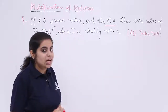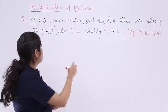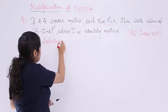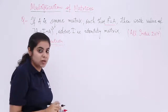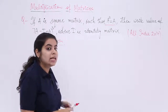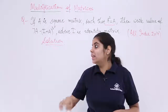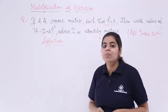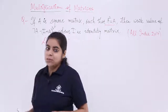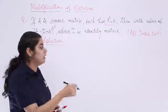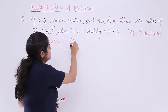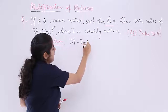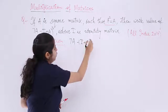Let's start the solution. First of all, let's write the expression again. The expression is 7A minus I plus A, whole cube. So I write the expression as (7A - I + A)³.